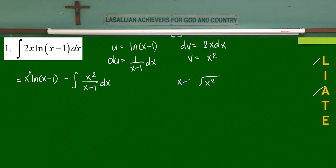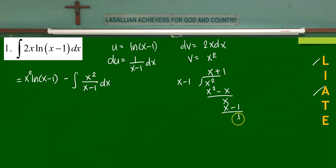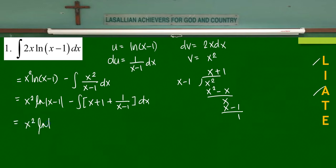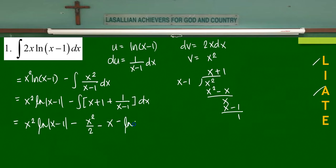Dividing x squared by (x-1) gives x squared minus x, resulting in a quotient of x plus 1 with a remainder of 1, so the integrand becomes x + 1 + 1/(x-1). Integrating that, the full result is x² ln(x-1) minus x²/2 minus x minus ln(x-1) plus C. We were able to apply integration by parts successfully.